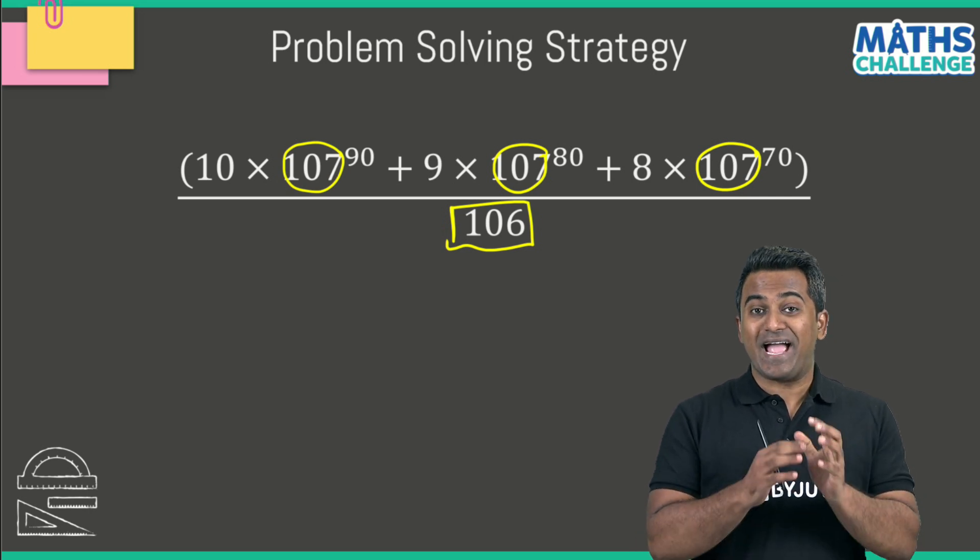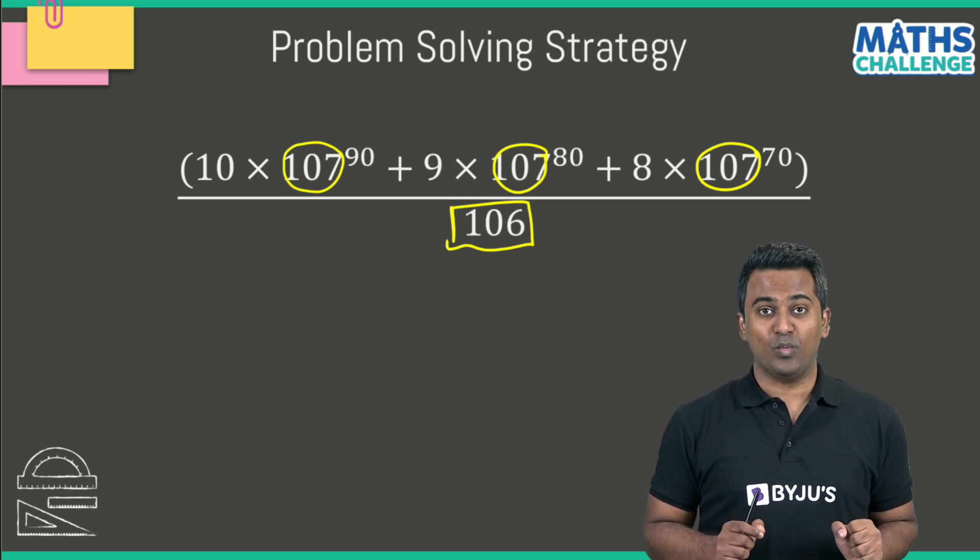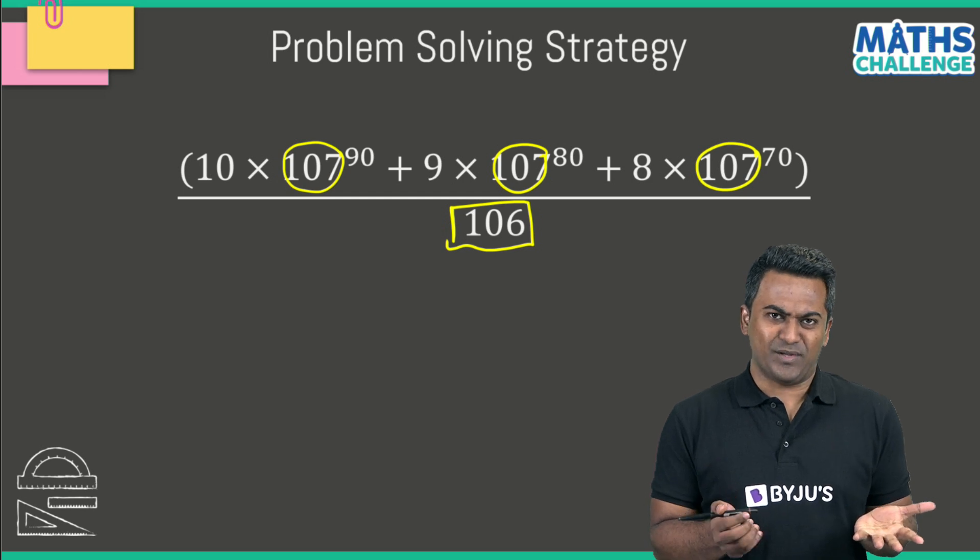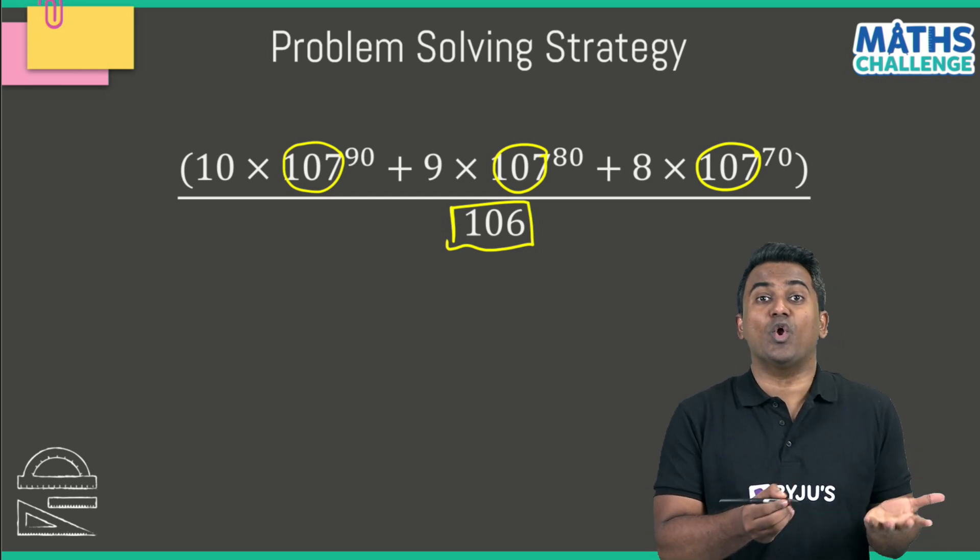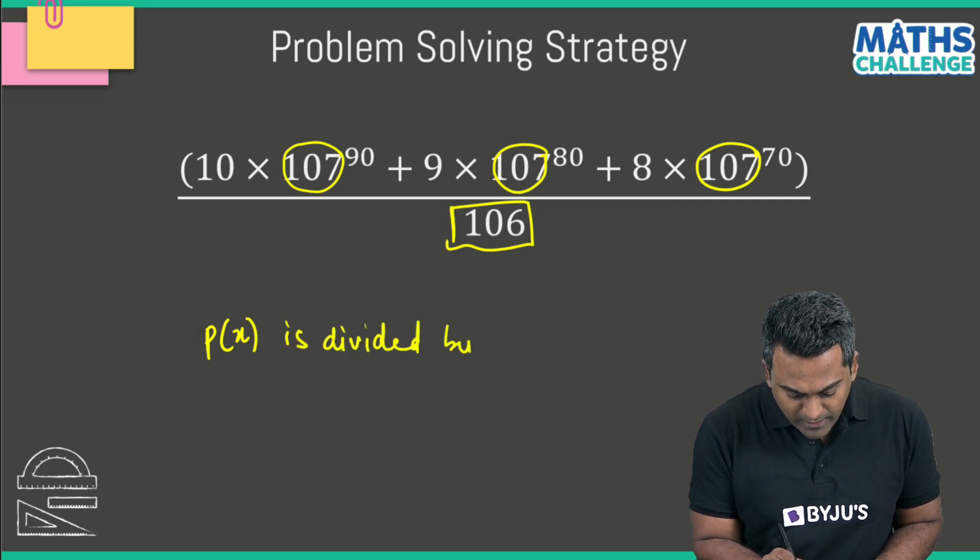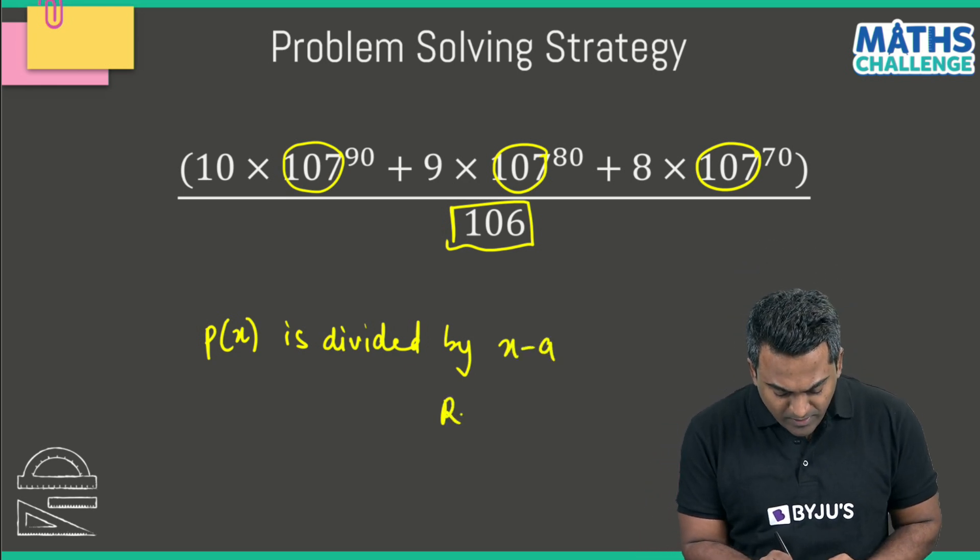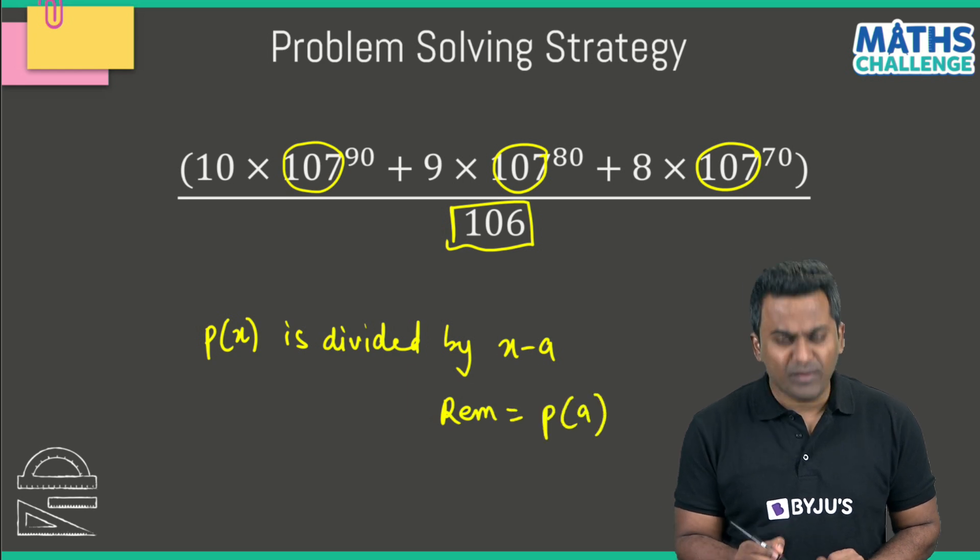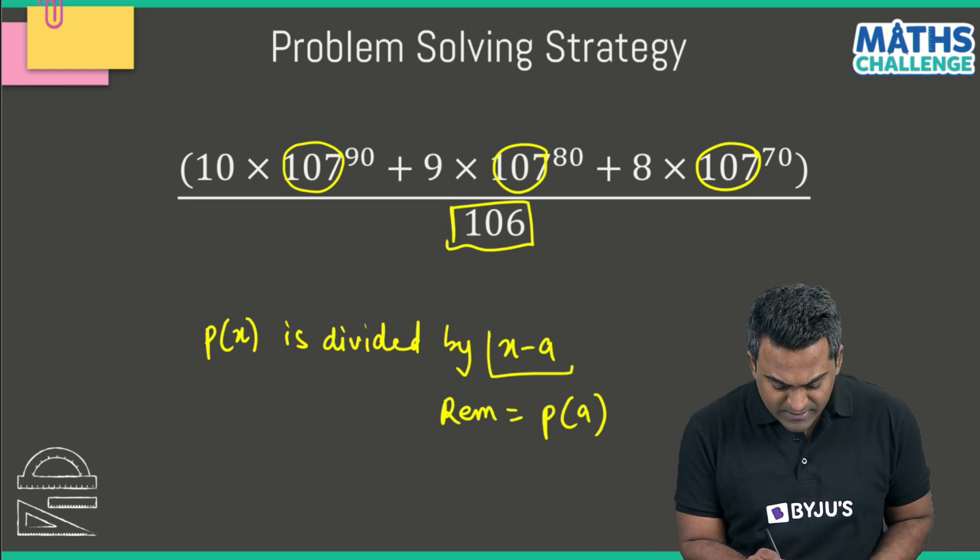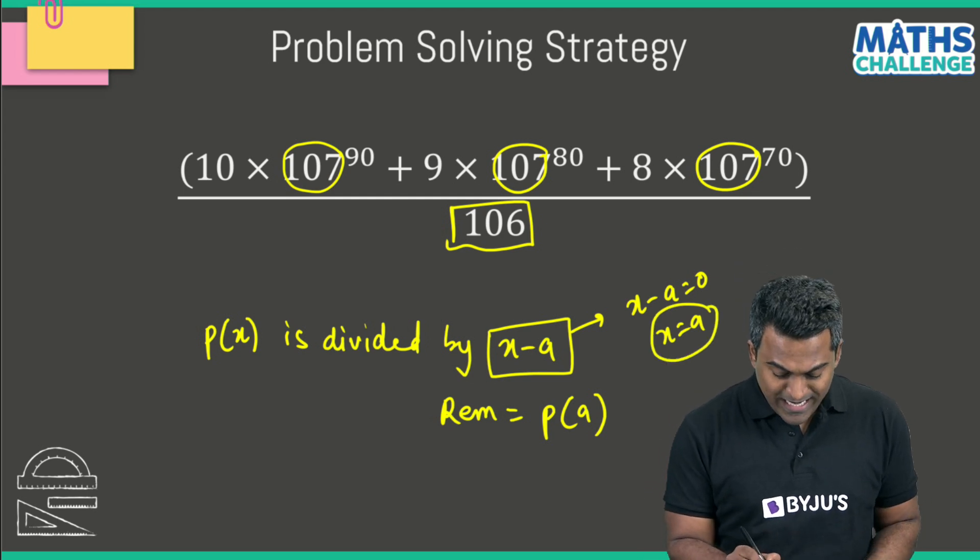Now I'm going to make you recollect a fairly simple theorem in algebra, what we call the remainder theorem. Let's suppose there's a polynomial in x, p(x). If p(x) is divided by x minus a, then if I apply the remainder theorem, the remainder is simply going to be p(a). We're all familiar with this: the divisor is x minus a, so we equate that to 0. That happens for the value x equals a, and we substitute that in the polynomial.